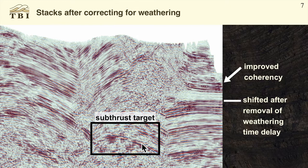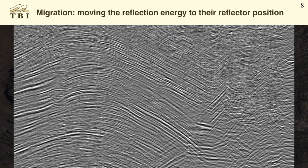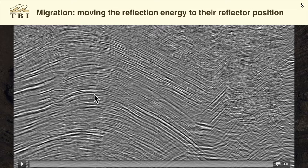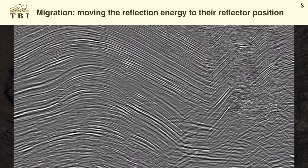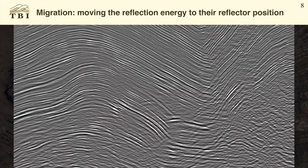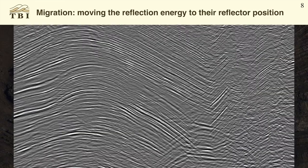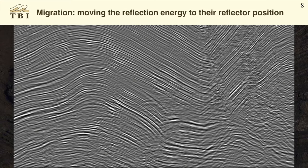One of the most important future steps in this process is migration — moving the reflection energy from where it's recorded into its correct reflector position. Before migration, the anticline ends up looking quite broad, wider than it should be, with diffraction energy coming off the sides. The syncline has energy crisscrossing down into its core. We need to migrate these correctly. We can over-migrate or under-migrate, and somewhere in between we find a migration velocity that gives a reasonably looking geologic shape to the anticline and syncline.